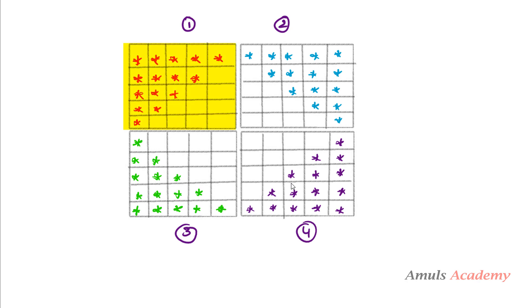First we will concentrate on pattern 1. If we take number of rows as 5, we will get this pattern — total 5 rows. We need to print first 5 stars, then 4 stars, 3 stars, 2 stars, and 1 star. Since we want to print stars in different rows and columns, we need a nested for loop.